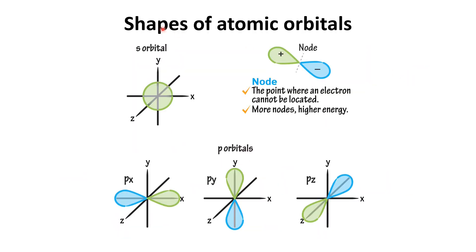First, let me give you a small recap of the shapes of the atomic orbitals. An atomic orbital is the region around the nucleus where there is a probability of finding electrons. Atomic orbitals are of four types: s, p, d, and f. Here we will only deal with s and p orbitals. The s orbital is spherical in shape, and the p orbitals are dumbbell-shaped. The p orbitals are of three types: px, py, and pz, aligned along the x, y, and z axes respectively.